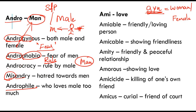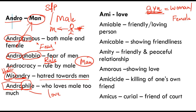'Androphile' is made up of 'andro' meaning male and 'phil' meaning love. If you excessively love men — in other words, if you are sexually attracted to men — you are considered an androphile. These are the words under the umbrella of 'andro'. As we've opened windows for 'gyn', 'phobia', 'cracy', 'phil', and 'mis', we will now learn those root words. Let's start with 'cracy'.